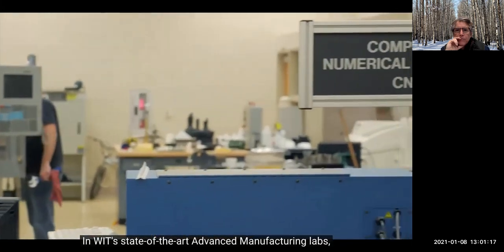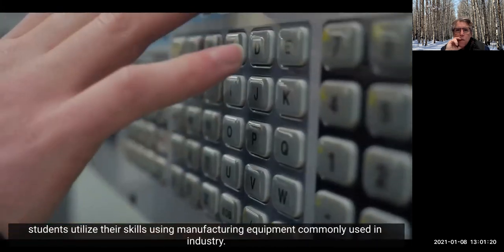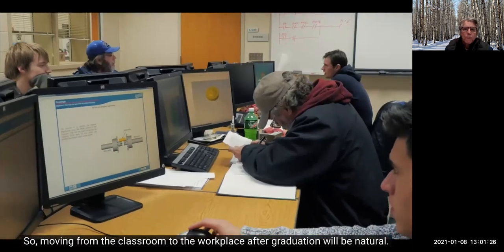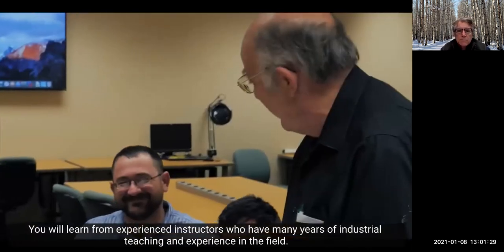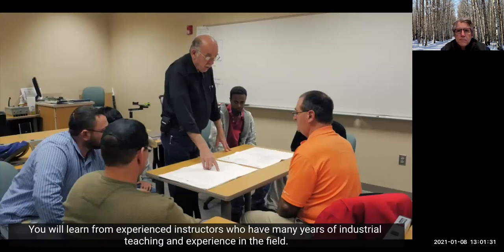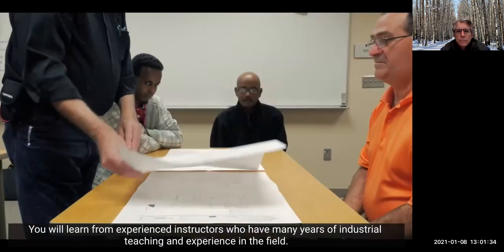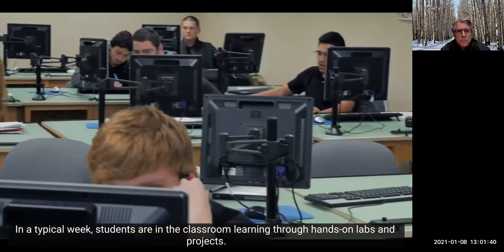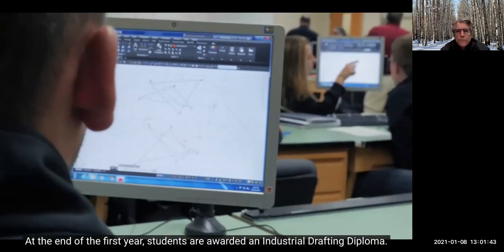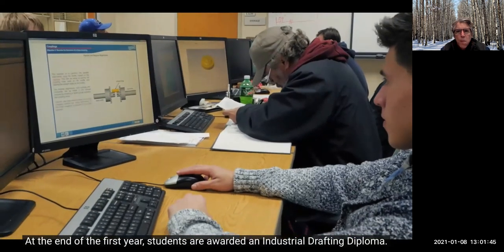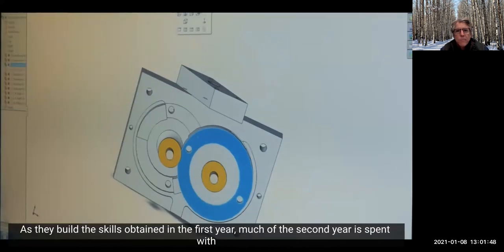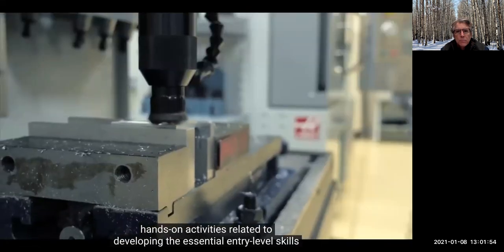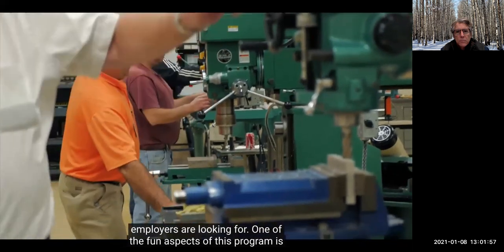In WIT's state-of-the-art advanced manufacturing labs, students utilize their skills using manufacturing equipment commonly used in industry. So moving from the classroom to the workplace after graduation will be natural. You will learn from experienced instructors who have many years of industrial teaching and experience in the field. In a typical week, students are in the classroom learning through hands-on labs and projects. At the end of the first year, students are awarded an industrial drafting diploma. Most students stay for the second year of the program as they build the skills obtained in the first year. Much of the second year is spent with hands-on activities related to developing the essential entry-level skills employers are looking for.